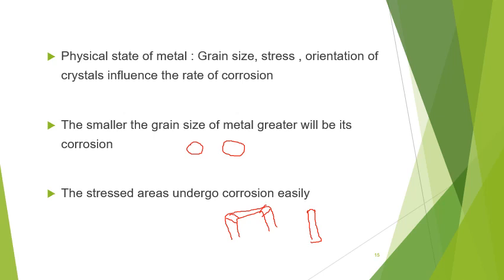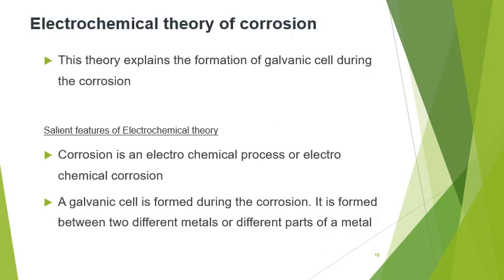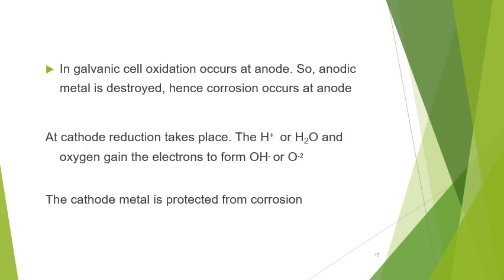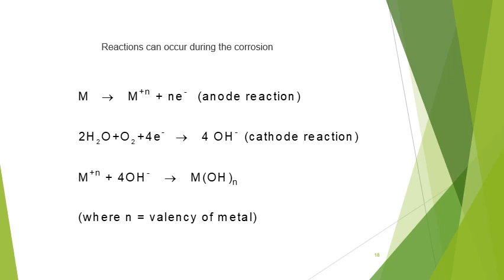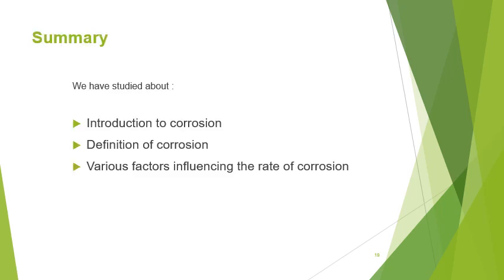To summarize this video lesson: we studied first the introduction to corrosion — metals have high reactivity and when placed in the atmosphere they get rusted, which means the metal is destroyed. This type of destruction is called corrosion. We also studied the definition of corrosion: slow and gradual disintegration of a metal due to atmospheric gases is called corrosion.